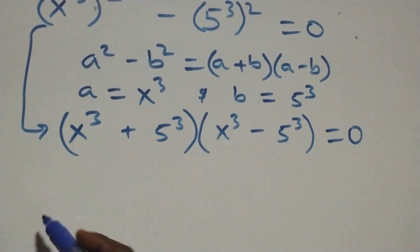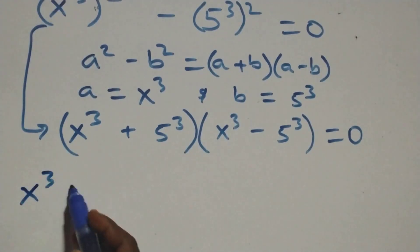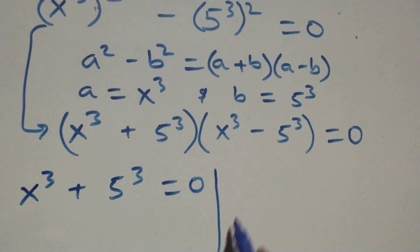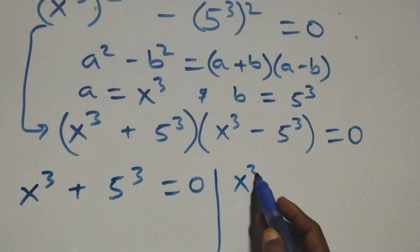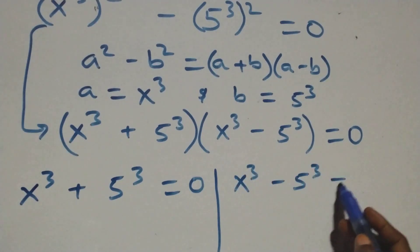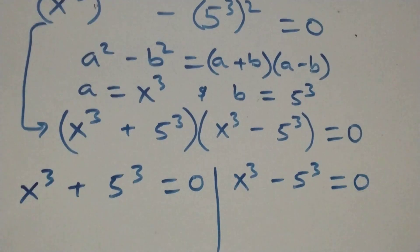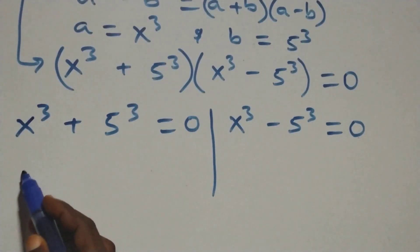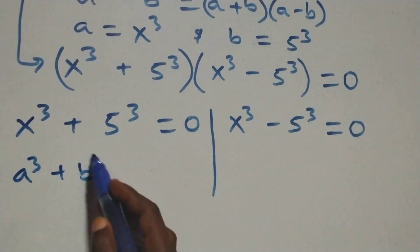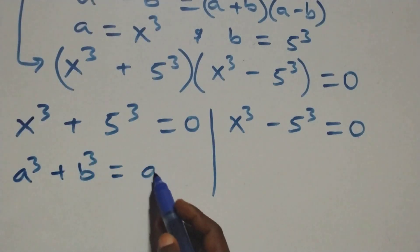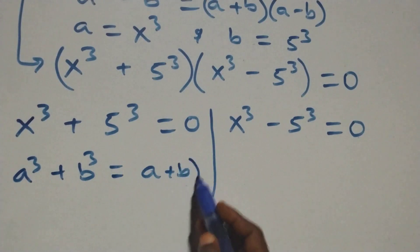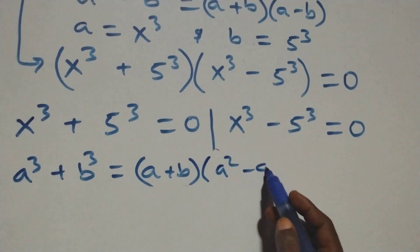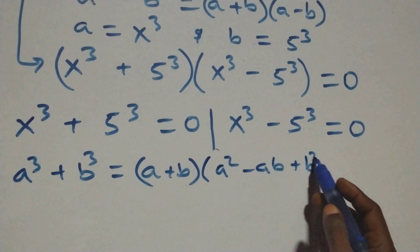Then we have two cases. The first one: x raised to the power 3 plus 5 raised to the power 3 equals to 0. We apply the sum of cubes identity: a cubed plus b cubed equals a plus b times a squared minus ab plus b squared.